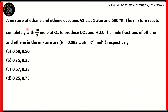Here comes our first question for the day. A mixture of ethane and ethene occupies 41 liters at 1 atmosphere and 500 degrees Kelvin. The mixture reacts completely with 10/3 moles of oxygen to produce carbon dioxide and water. We've also been given the value of R as 0.082 liter atmosphere per Kelvin mole.